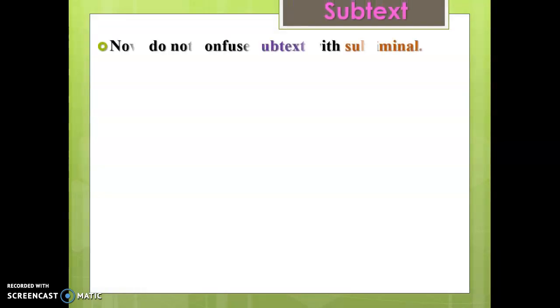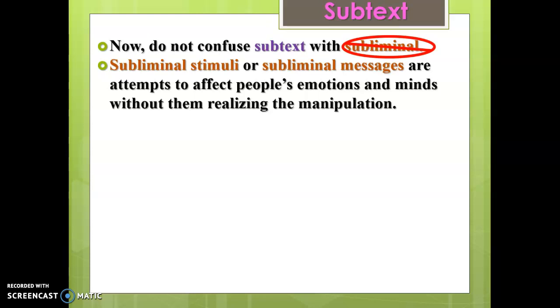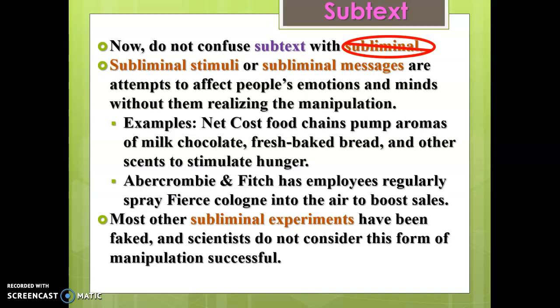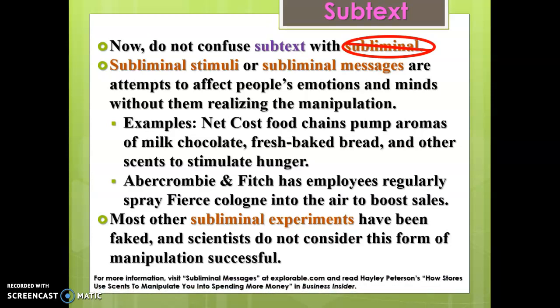We'll be looking at subtext in a lot of different contexts. When I say subtext, don't confuse it with subliminal - students in the past have confused the two. They are two completely separate things, and subliminal messages are not relevant to this course. Subliminal messages are those attempts that affect people's emotions and minds without them realizing it - like food chains using smells to stimulate hunger or clothing stores spraying cologne. Almost every subliminal experiment has been faked or debunked and not anywhere near a form of successful manipulation. Make sure you never reference subliminal messages; we're always talking about subtext and subtextual meaning.